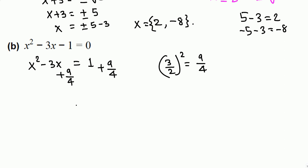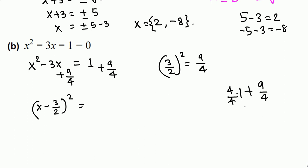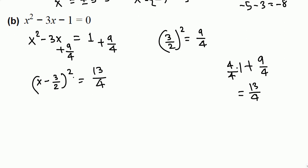Adding 9/4 to both sides: the left-hand side becomes the perfect square (x − 3/2)², since 9/4 = (3/2)². The right-hand side is 1 + 9/4. Since 1 = 4/4, we get 4/4 + 9/4 = 13/4.